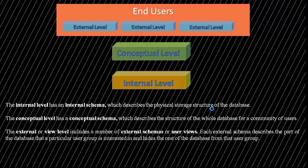The three-tier architecture is divided into three general levels: internal, conceptual, and external. Three important characteristics of the database approach are: first, insulation of the program and data; second, support of multiple views; and third, the use of a catalog to store database description, called a schema. This is called the three-schema architecture, which was proposed to help achieve and visualize these characteristics.